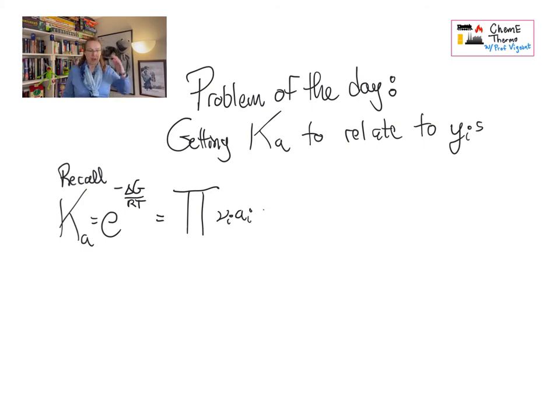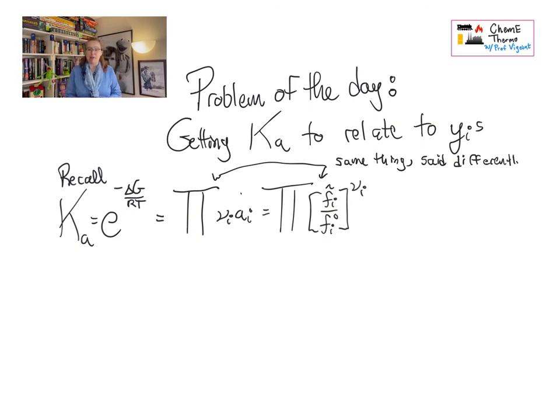So Ka, as you recall, is equal to e to the negative delta G over RT, where delta G is for the reaction adjusted to the temperature. That is also equal to the multiplication over all values of i of activity raised to the nu i power, or equivalently the ratio of the fugacities raised to the nu i power. This side of the equation, where the activities or the fugacities are, is how we're going to get our concentrations. It's how we're going to figure out what the equilibrium composition of the reactor is.